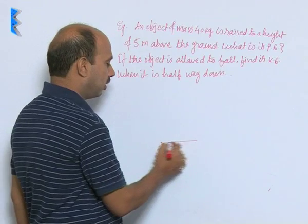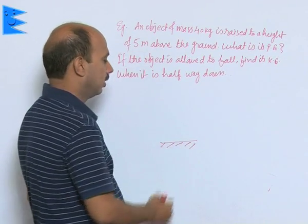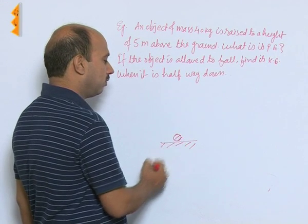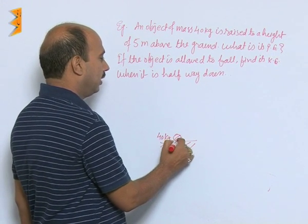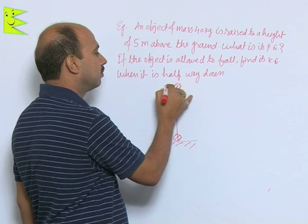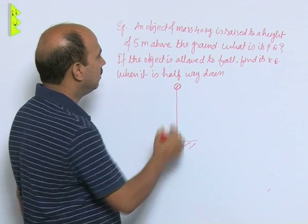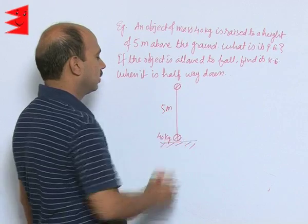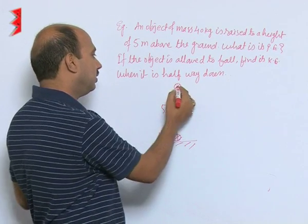Here this is the ground. There is an object of mass 40 kg and it is lifted to a height of how much meter, 5 meter. Now what is its potential energy at this height?